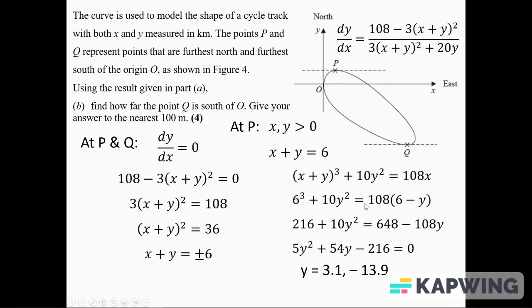So the answer we want then is 13.9 kilometers south of O, it's that distance. You could write it's 13,900 meters. It would say it wanted to the nearest 100 meters, either of those answers would be okay.